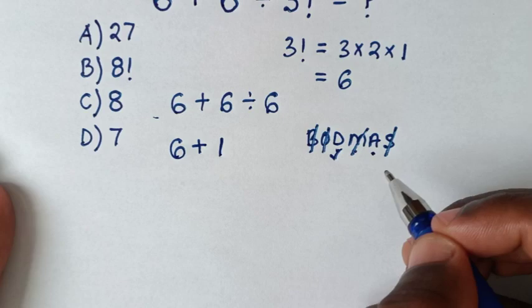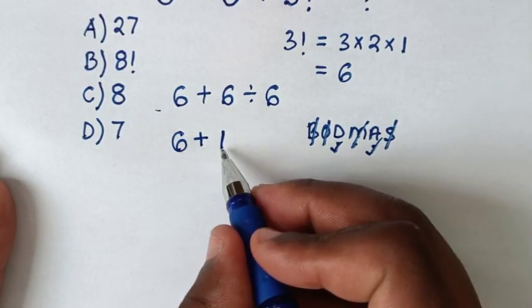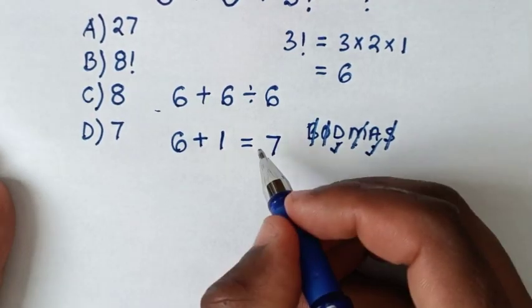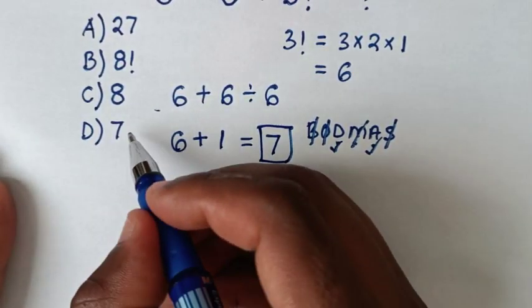Now order D with division then we'll do with addition. Now from addition it is 6 plus 1 which is equal to 7. Therefore 7 is our final answer which is D.